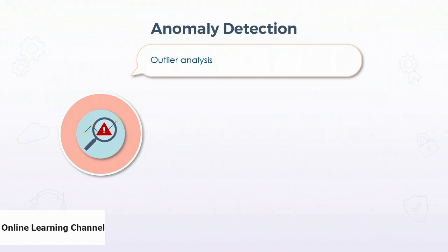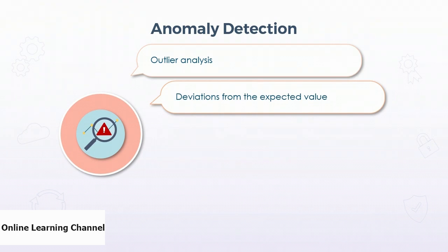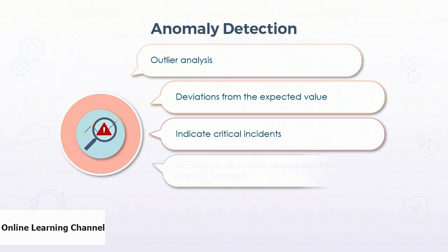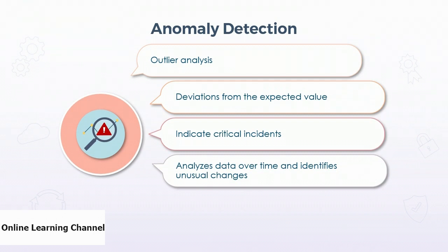When we talk about learning patterns and looking for outliers, we need to consider what a normal pattern is. For example, a spike in sales on Black Friday would be expected for most e-commerce sites, and not seeing that traffic increase would be indicative of a deviation from the expected value. Anomaly detection can also be used as an indicator of a critical incident — like a distributed denial of service attack, or an unusual quantity of water flowing along one pipe indicating to a utility company that a rupture has occurred.